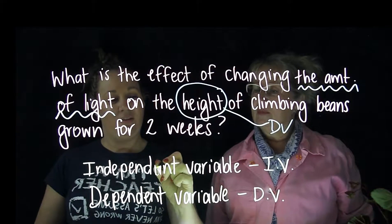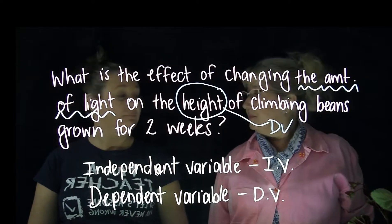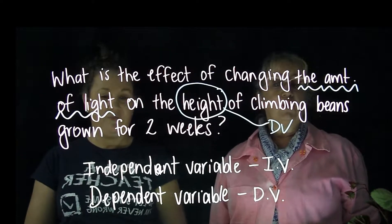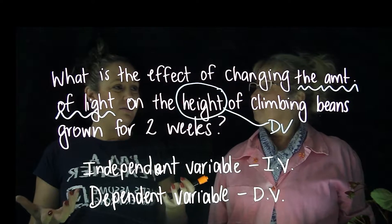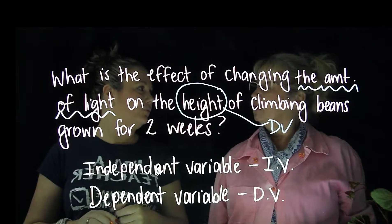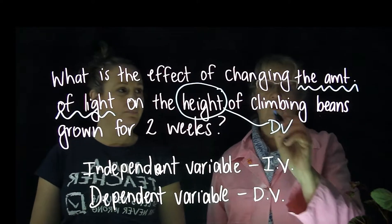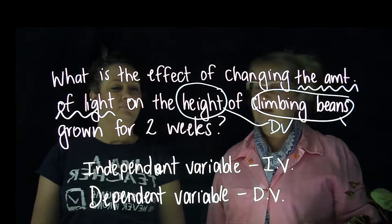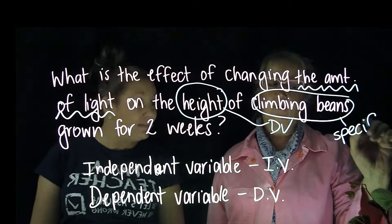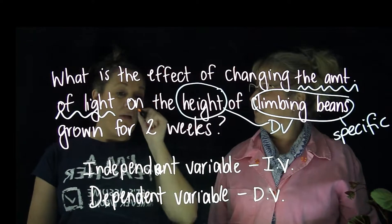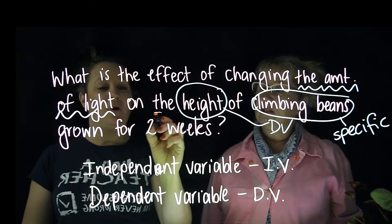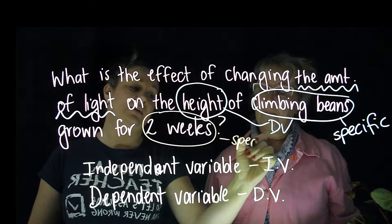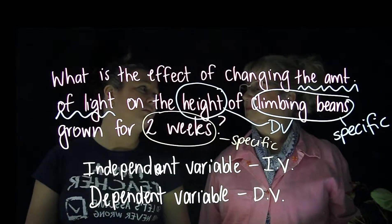Lastly, we need to make it specific so that we can actually test it in the lab. If it's not specific enough, it's not really doable and it makes life very difficult. We've made it doable by saying we're going to use climbing beans, so we don't have to test every single plant on the face of the earth. The other thing making this question very specific is that we're only testing for two weeks — because if we had to test for longer than that, we'd get bored, run out of time, and the assignment wouldn't be in on time.